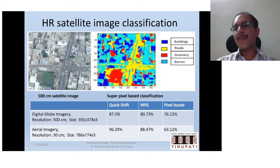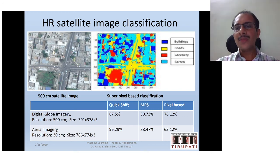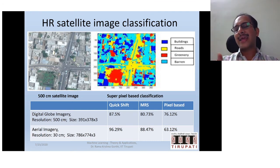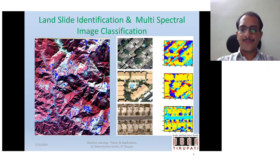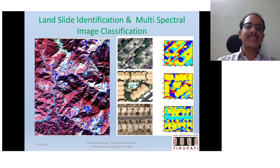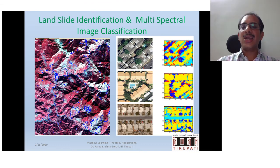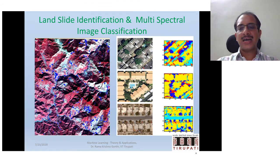Similar applications can be done for hyperspectral or multispectral images, where we may have several bands and based on those bands would like to categorize pixels into buildings, water, road, etc. This also finds applications in landslide identification, where there is a change in a region due to landslides.